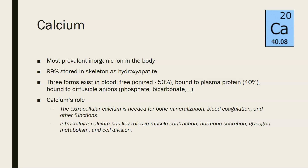There are three forms of calcium that exist in the blood: free calcium, also known as ionized calcium, which is about 50% of the calcium in the blood; calcium bound to plasma protein, which is 40%; and calcium bound to diffusable anions like phosphate and bicarbonate, which makes up the other 10%.